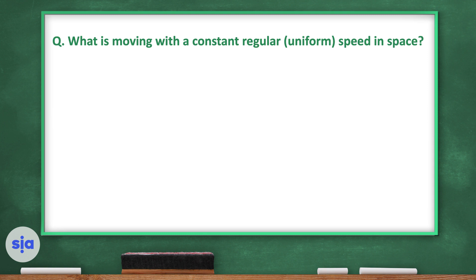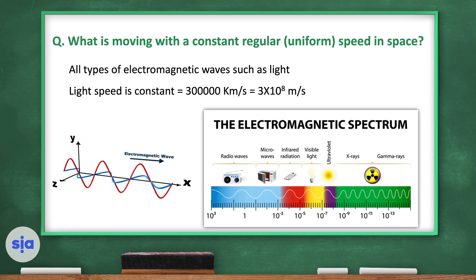What moves with a constant, regular, uniform speed in space? It's light — all types of electromagnetic waves, and light is one of them. Light has a constant speed of 300,000 km per second, or 3 × 10⁸ meters per second. Now let's watch this video together.